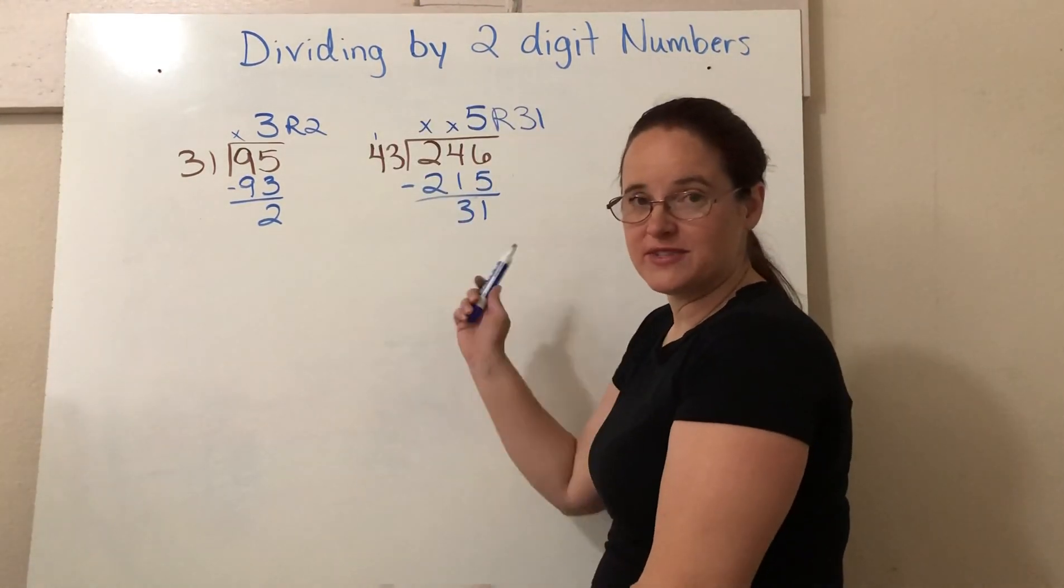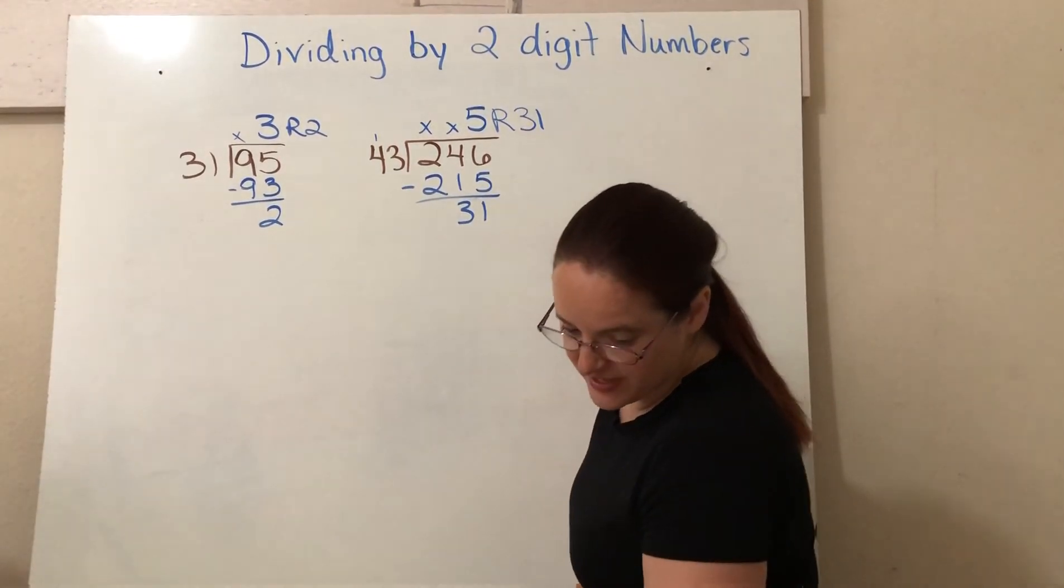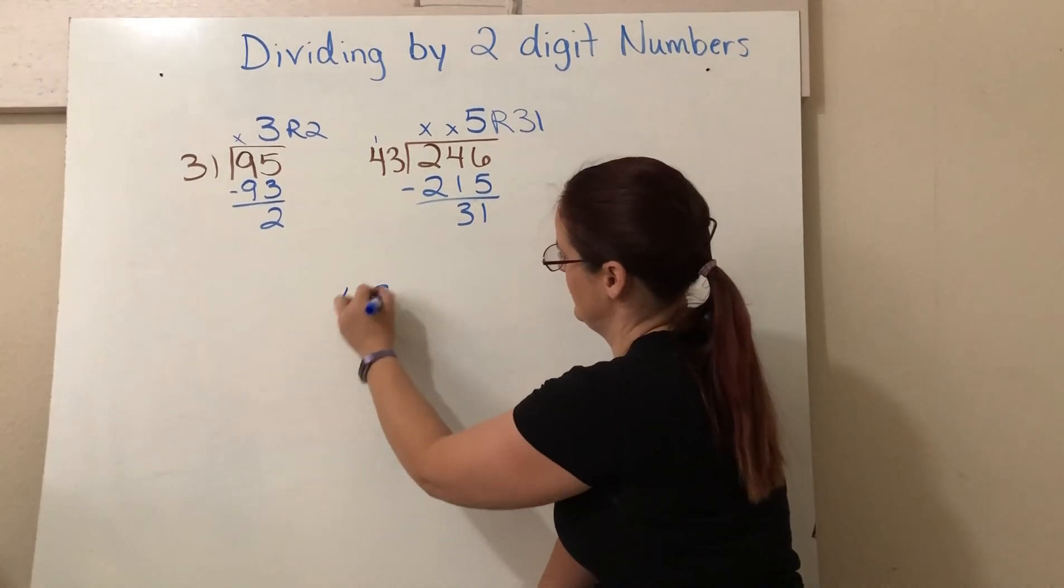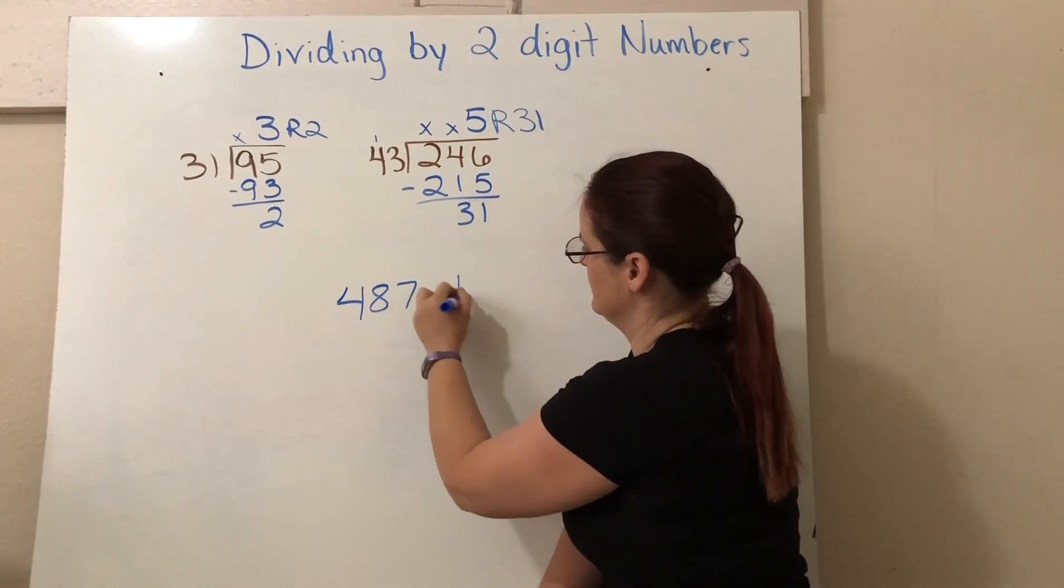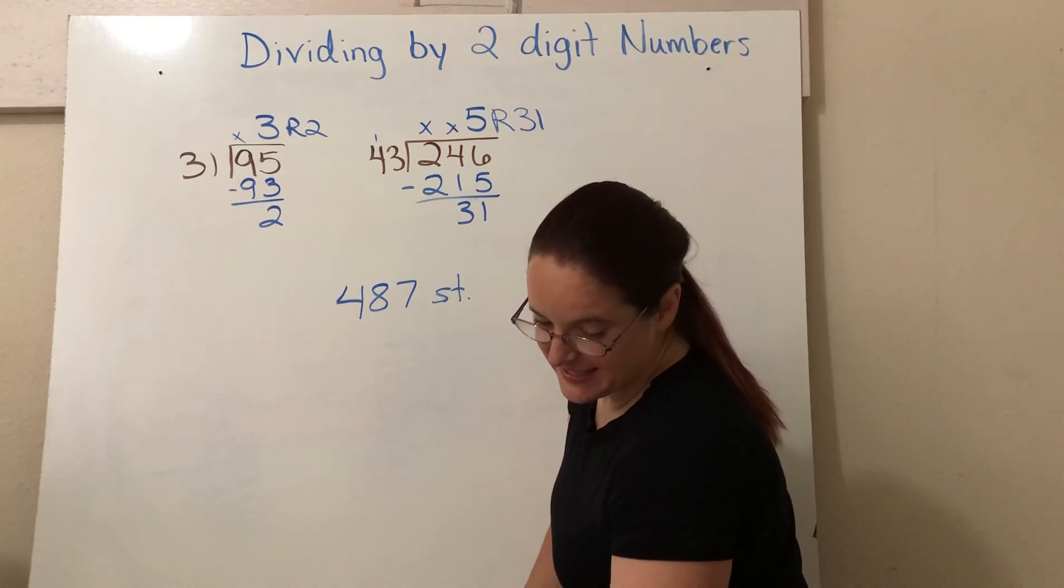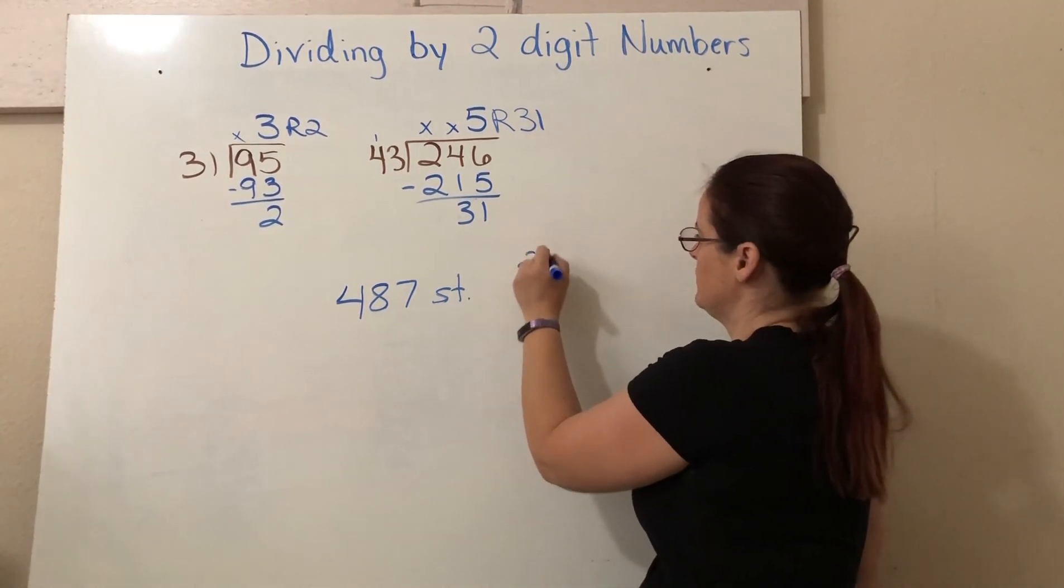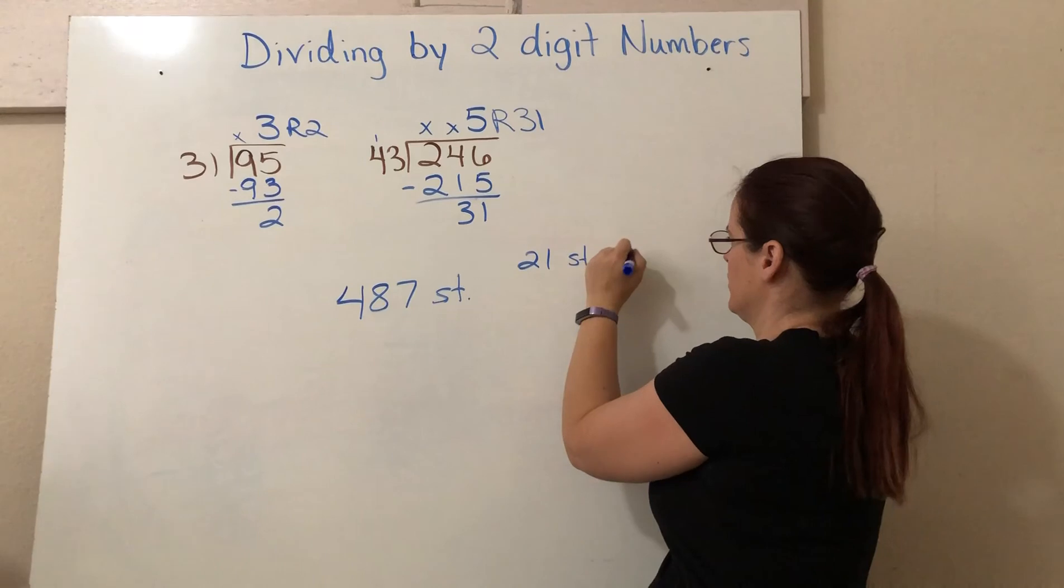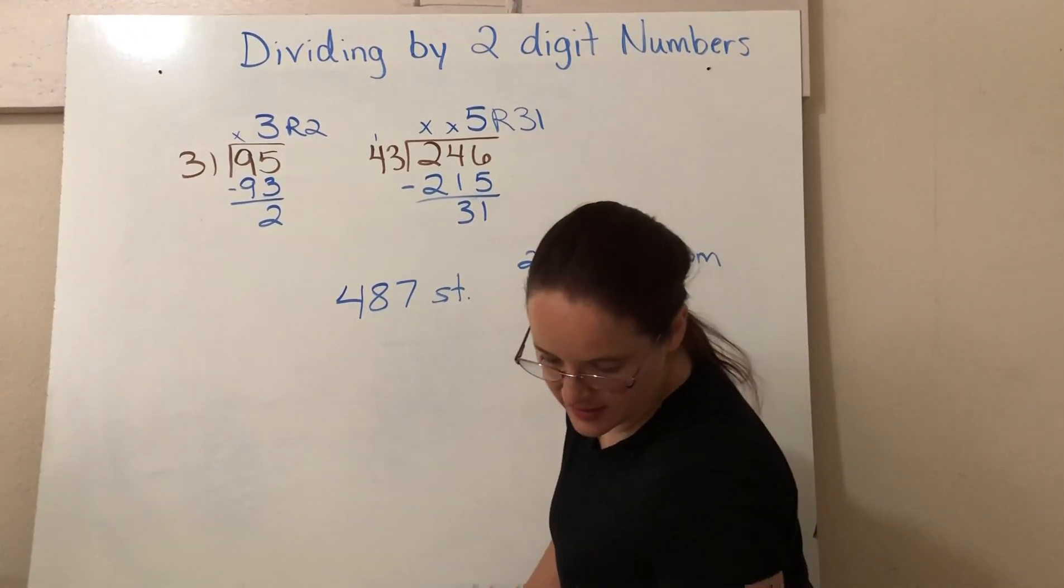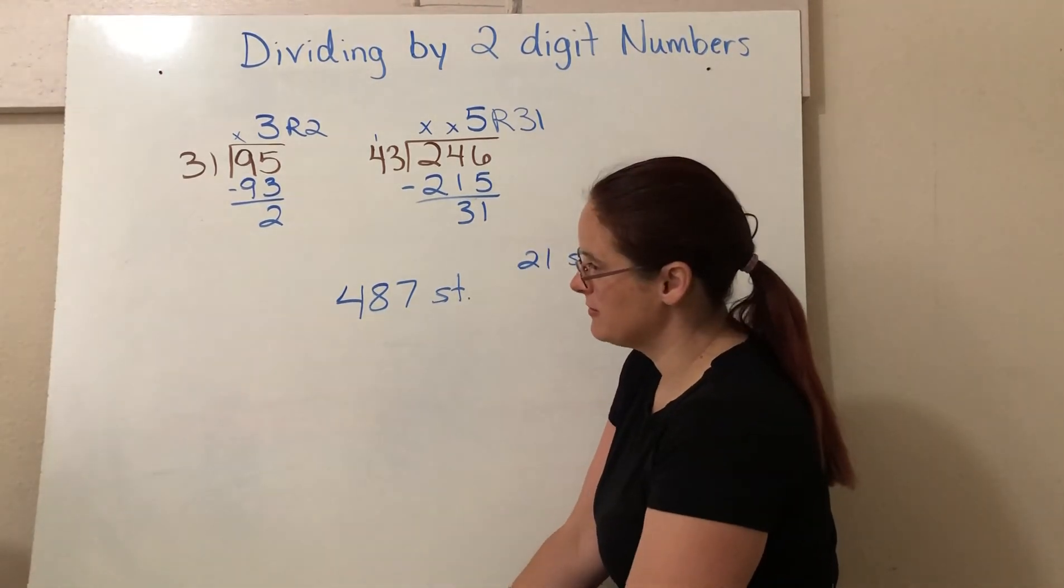Okay. Sometimes you might have to use this skill for a word problem. So we're going to practice that now. 487 students will be assigned to classrooms so that the average number of students in each room is 21. So 21 students per room. How many classrooms of students will there be? Well, what kind of problem is this, Nyla?